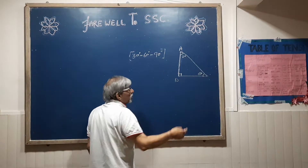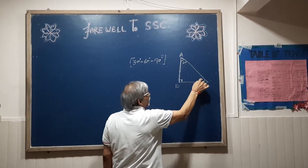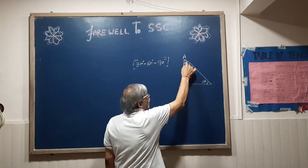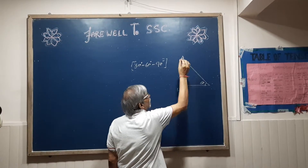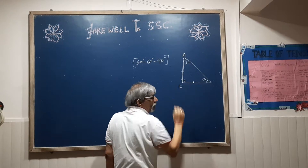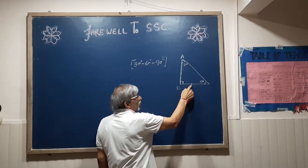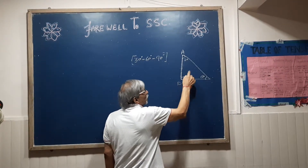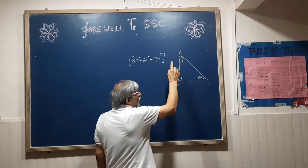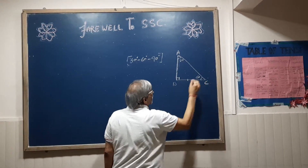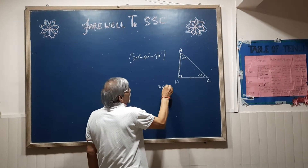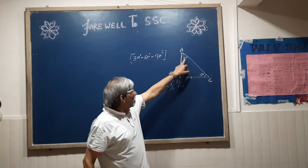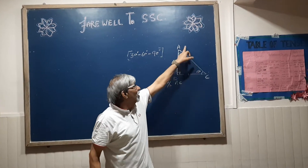In a 30-60-90 degree triangle, the side opposite to 30 degrees is half of the hypotenuse. The hypotenuse is opposite the 90 degree angle. That is, if we write it as an equation: DC is equal to half of AC. Side opposite to 30 degrees is half of the hypotenuse.